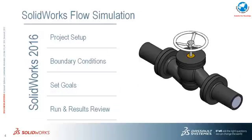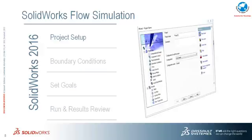Coming to the demonstration, I have a small valve example to validate the pressure drop across the valve. We will start by setting up the project, applying boundary conditions, setting goals, and running the analysis. The first step is to set up the project using the wizard, where we will define the fluid and its properties by providing the necessary input data.